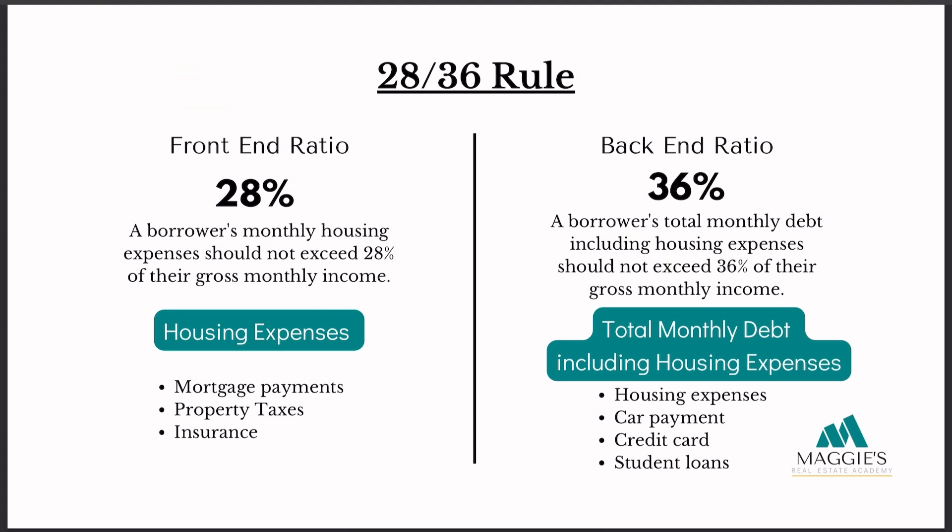The front-end ratio suggests that a borrower's monthly housing expenses should not exceed 28% of their gross monthly income. This includes mortgage payments, property taxes, and insurance. The back-end ratio, on the other hand, states that a borrower's total monthly debt — including housing expenses — should not exceed 36% of their gross monthly income.